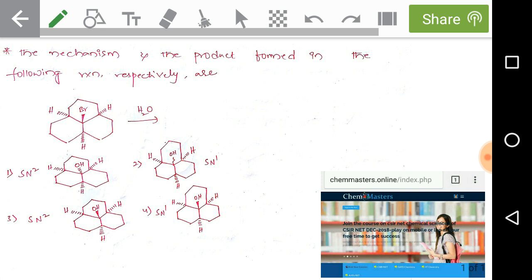Now let's come to the question. We need to find the mechanism and product formed in the following reaction with water. The reactant has stereochemistry - three hydrogens on three rings are given back to the plane.